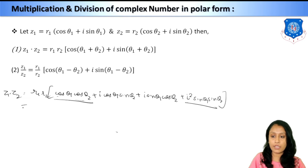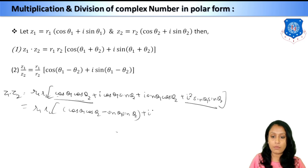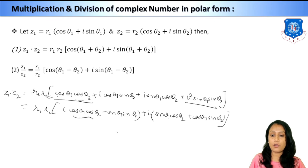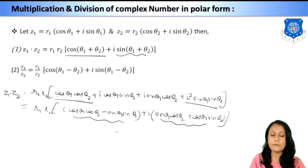So z₁·z₂ = r₁r₂[(cos θ₁ cos θ₂ − sin θ₁ sin θ₂) + i(sin θ₁ cos θ₂ + cos θ₁ sin θ₂)]. Using the addition formulas, this equals r₁r₂[cos(θ₁ + θ₂) + i sin(θ₁ + θ₂)]. This is the multiplication of z₁ and z₂ in polar form.